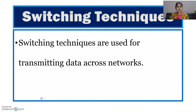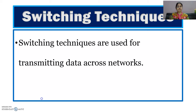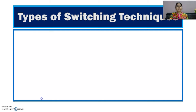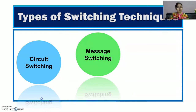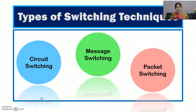Now we will study the switching techniques. We have covered the types of networks and understood that data will be transferred. Now how will that transfer happen — that is the switching technique. Data transmitted across a network uses one of three switching techniques: circuit switching, message switching, and packet switching.